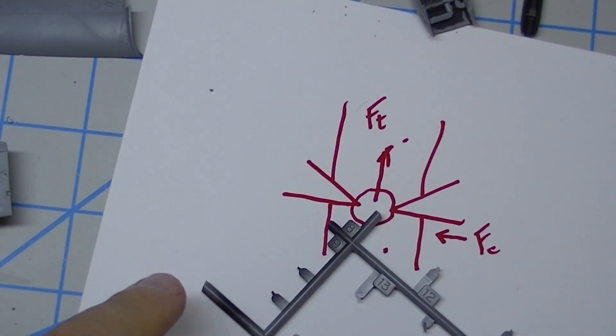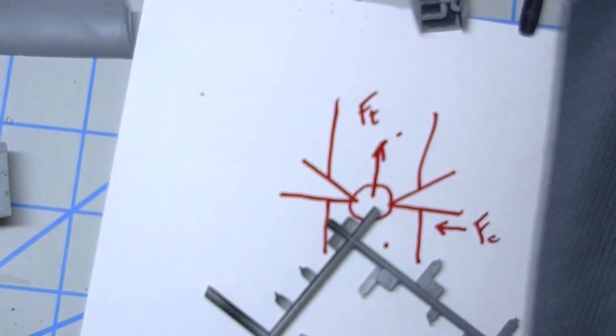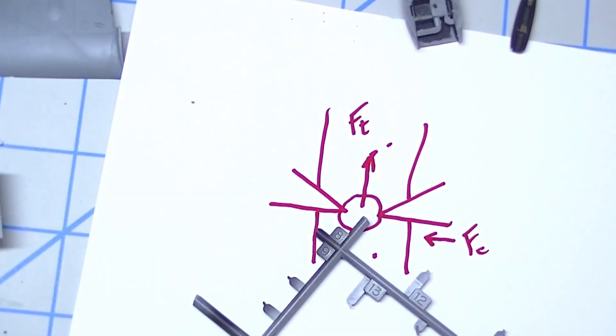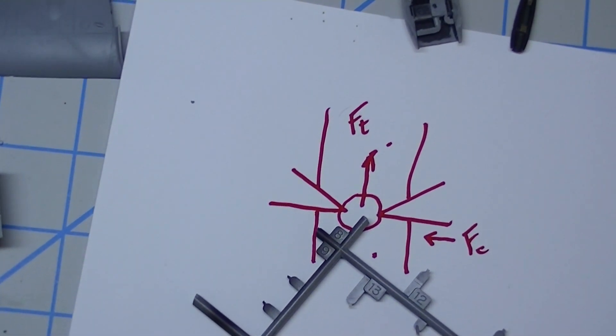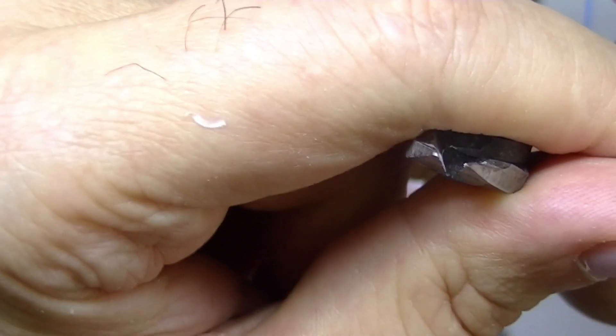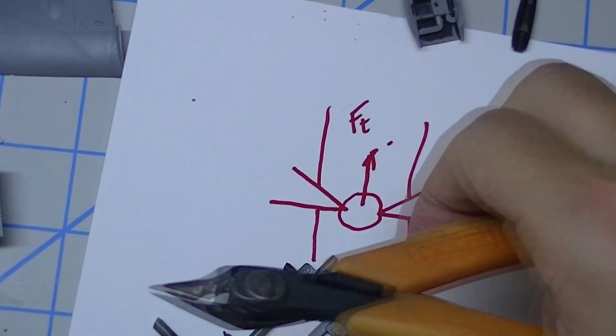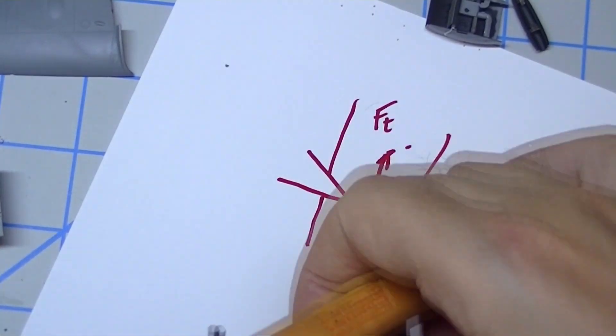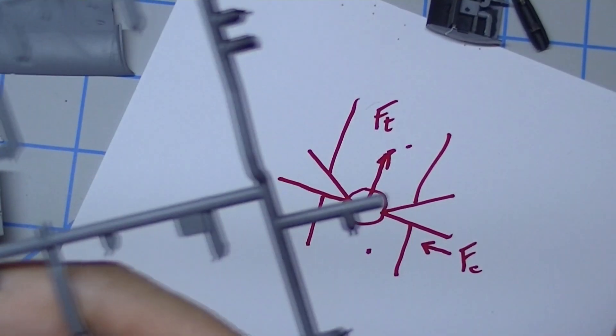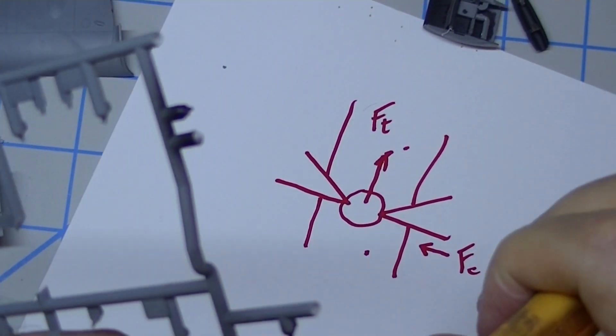So that is what's happening with a standard side cutter. Now let's say you graduate to something like this pair of Xurons. That is still two sharpened wedges coming at each other, and you're still going to be doing the same thing. Now maybe not as bad because these wedges are not as thick and they're a little bit sharper.